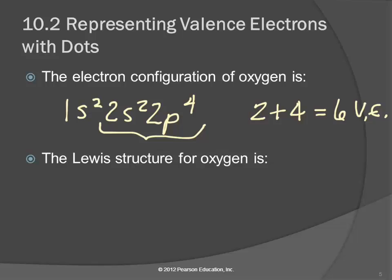I tend to abbreviate valence electrons as VE — valence electrons, not victory in Europe. So the Lewis structure for oxygen is we take the element symbol and put the valence electrons around it as dots. We're going to put six dots. We tend to put them top and bottom, right and left. Put them around singly first, and then pair them up. So that's the Lewis structure for oxygen.